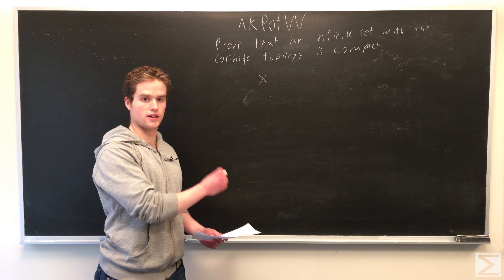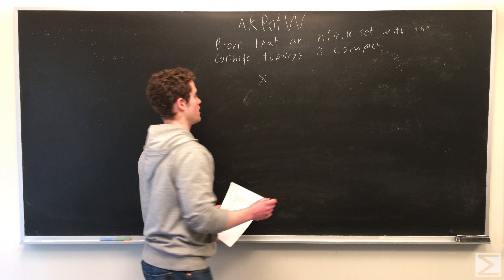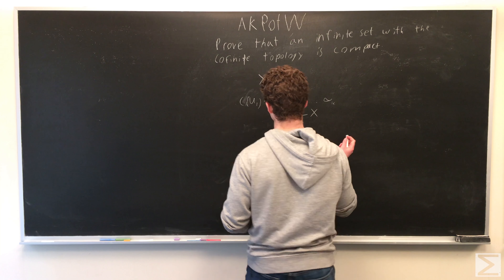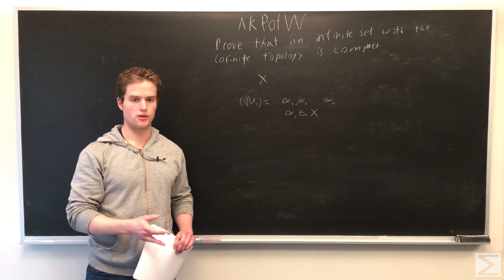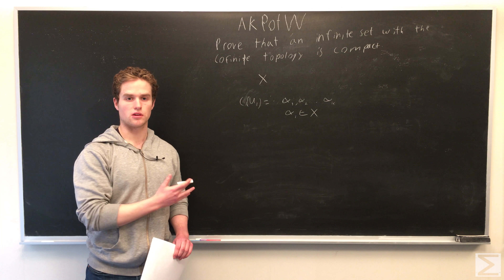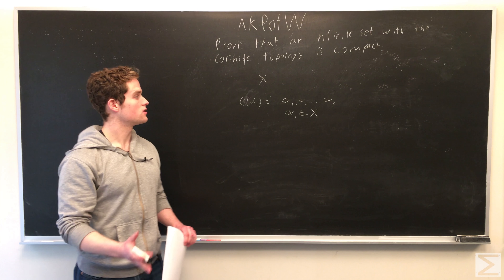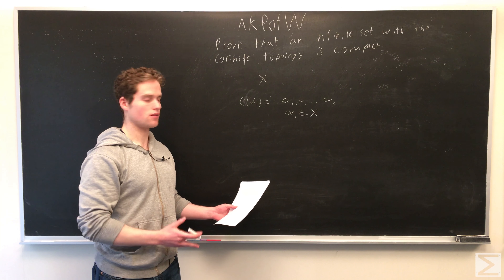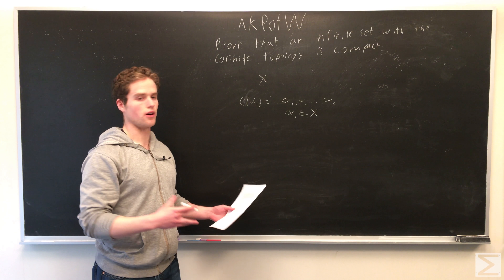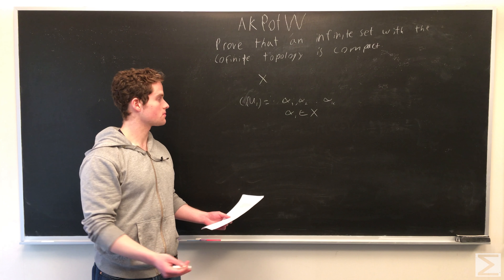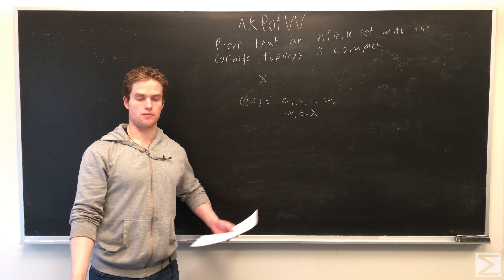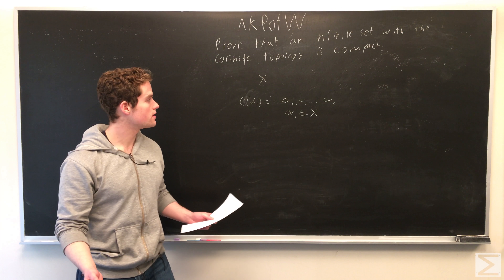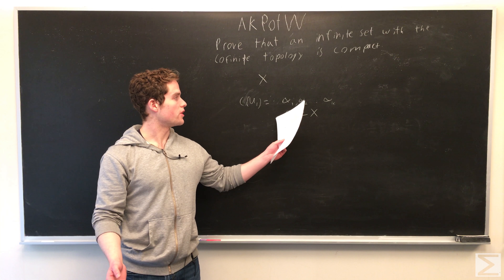So we have some set X, and let's say we have some covering with open sets. In the co-finite topology, the closed sets are the finite sets, the null set, and the whole set X. So those are the closed sets of our set X. We want to find a finite sub-covering of X.